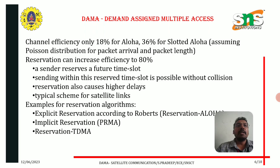In DAMA, demand assigned multiple access, channel efficiency is only 18% for ALOHA and 36% for slotted ALOHA. By assuming a Poisson distribution for packet arrival and packet length, reservation can increase efficiency to 80%. If a sender reserves a future time slot, sending within this reserved time slot is possible without collision. The reservation also causes higher delays. The typical scheme for satellite links is demand assigned multiple access.